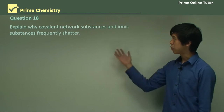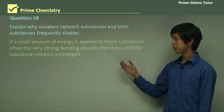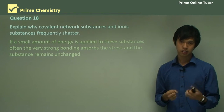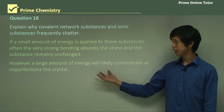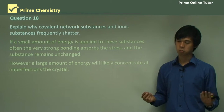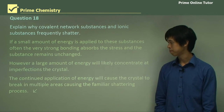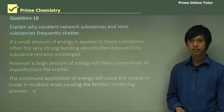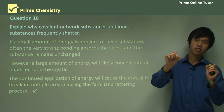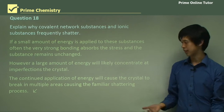Question 18: explain why covalent network substances and ionic substances frequently shatter. If a small amount of energy is applied, the very strong bonding absorbs the stress and the substance remains unchanged. However, a large amount of energy will concentrate at imperfections in the crystal. Continued application of energy will cause the crystal to break in multiple areas where these imperfections are, causing the familiar shattering process — each imperfection becomes a break point, so the substance breaks into many pieces.